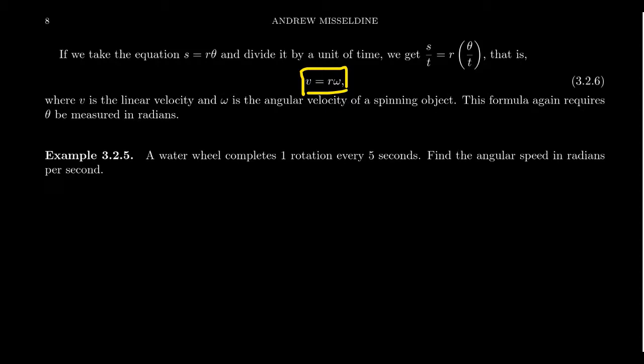Suppose we have a water wheel that completes one rotation every five seconds. What would be the angular speed in radians per second? So, trying to convert these things over so we have one rotation, one revolution every five seconds. So we have this ratio, one revolution per five seconds. Well, we want to convert that revolution into radians.